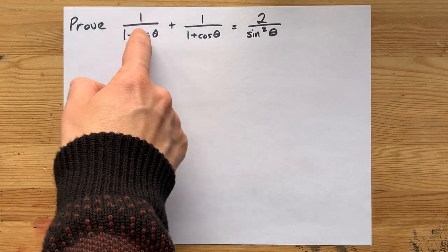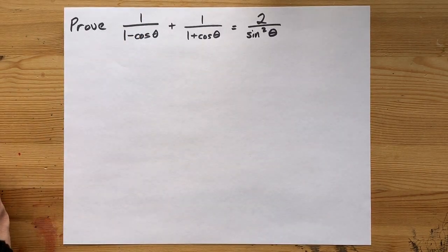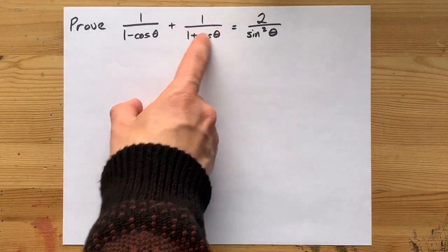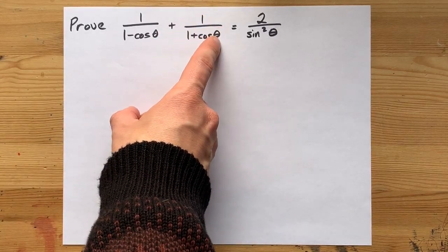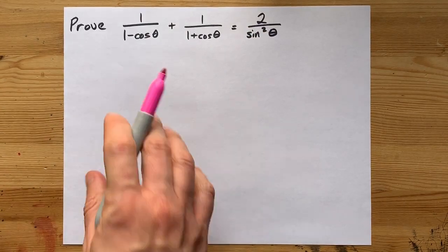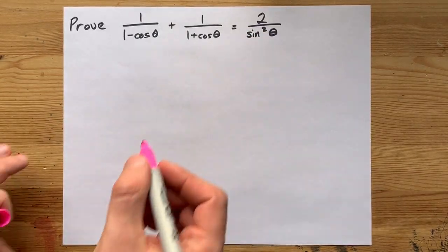Can we prove that 1 over 1 minus cos of an angle plus 1 over 1 plus cos of that angle is equal to 2 over sine squared of that angle? Yes, but I don't think you're going to like it.